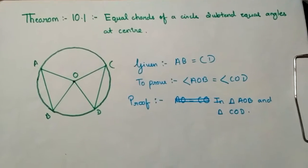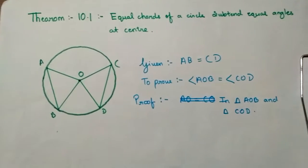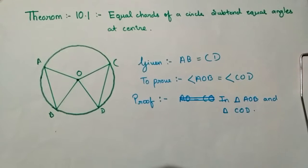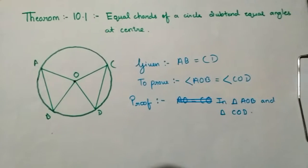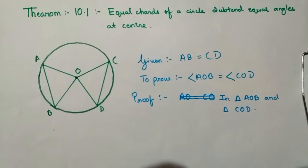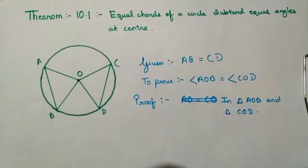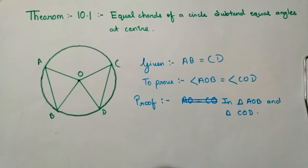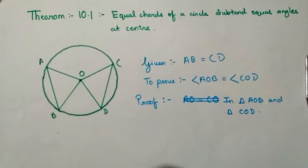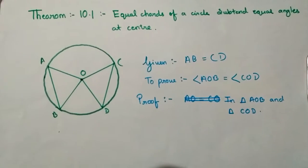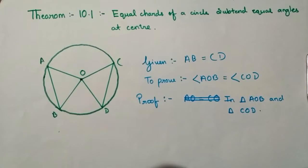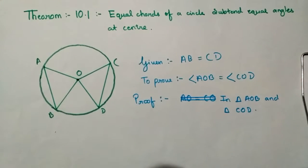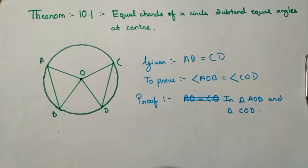Hi friends, welcome to my YouTube channel Smart Study Point. In this video, I will tell you about how to prove Theorem 10.1 of the class 9 NCERT book. This theorem states: equal chords of a circle subtend equal angles at the center.